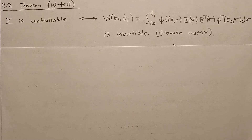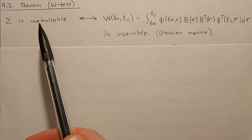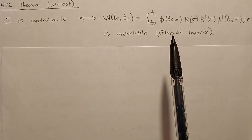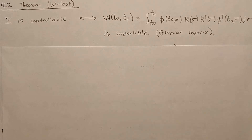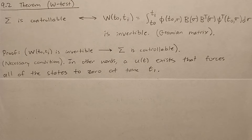Here's the theorem behind the W test. It says that our system sigma is controllable — and that's the same thing as saying that this Gramian matrix defined here is invertible. To prove this, we need to show two things: that if the Gramian matrix is invertible, that implies the system is controllable; and then that if the system is controllable, the Gramian must be invertible.